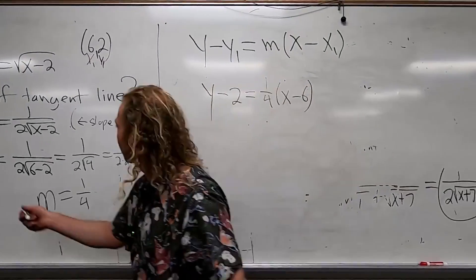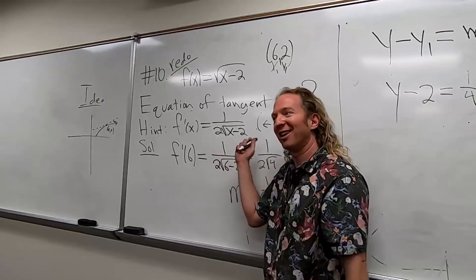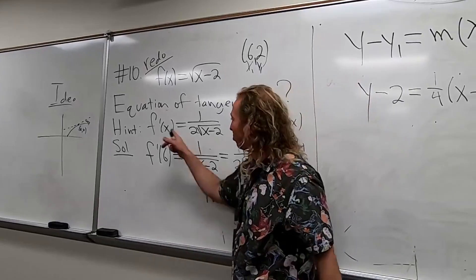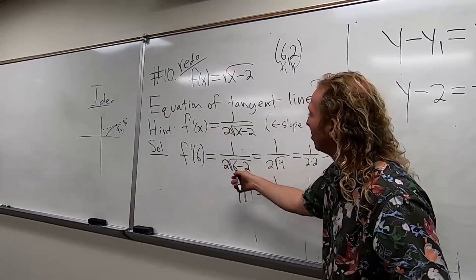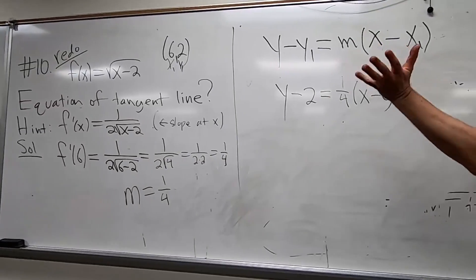So step one in this problem, plug in the number to the slope function. The slope function. I just called it that. That's what it is, right? It's a function that produces slopes. You plug in x values, it spits out a slope. We plugged in 6. It gave us one-fourth. Step two, write the formula down. Plug everything in.